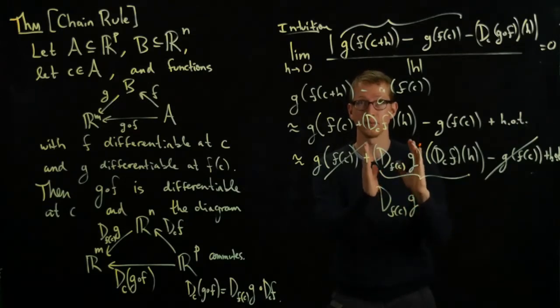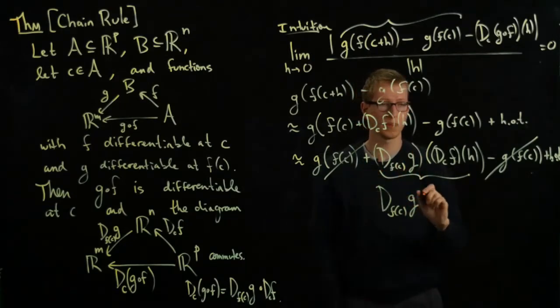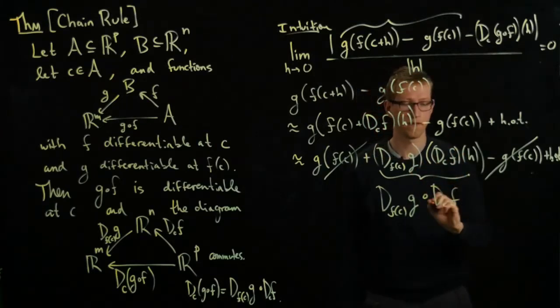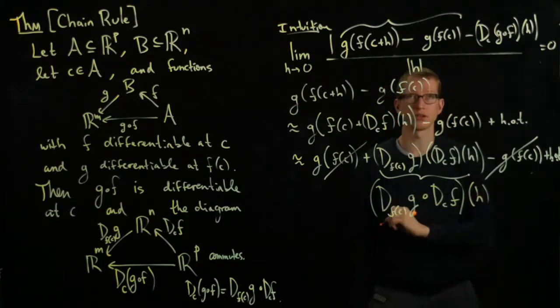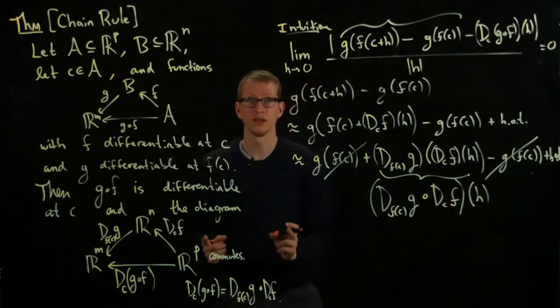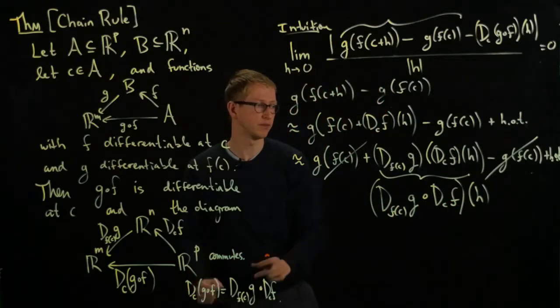Think of this as a matrix, a linear transformation. This is also a linear transformation. So I have two linear transformations applied to the vector H, and this linear transformation is exactly this composition that is in the claim of the theorem.